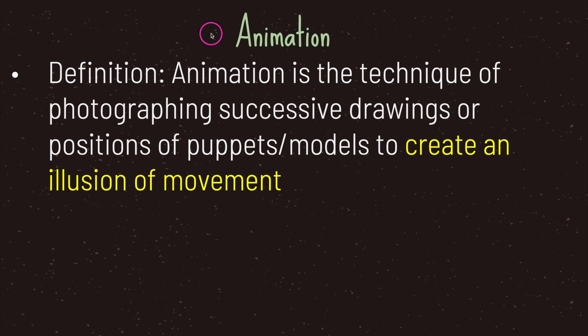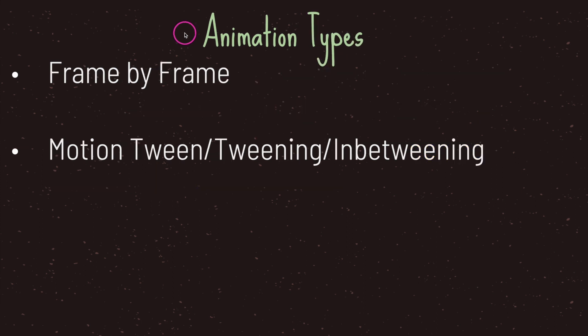Let's start with the definition of animation. Animation is the technique of photographing successive drawings or positions of puppets and or models to create an illusion of movement. There are two types of animation: the first is frame by frame animation, and the second is motion tween animation, which can also be referred to as tweening or in-between.